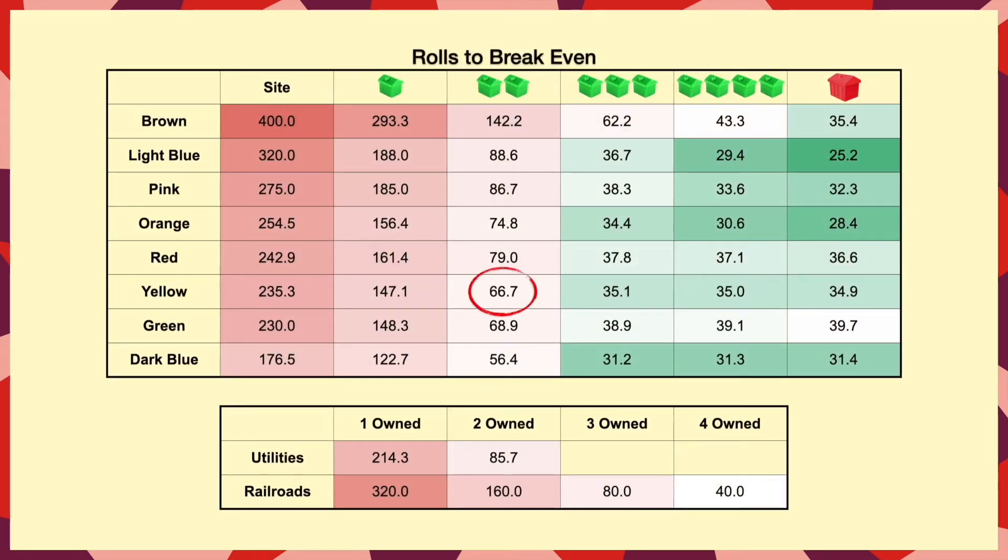Here you can see the 66.7 we just calculated for the yellow set with two houses, and now if we look at each column to see which set is best for each possible number of houses, we can see that the dark blues have the lowest expected number of rolls to break even, for everything up to three houses.